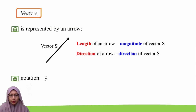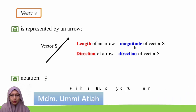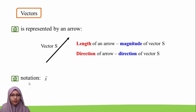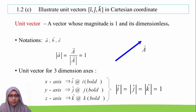Let us focus on vectors. A vector is represented by an arrow. For example, vector s is shown as an arrow. The length of the arrow represents the magnitude of vector s, and the direction of the arrow tells us the direction of vector s. The vector is denoted by a letter with a small arrow on top of it.